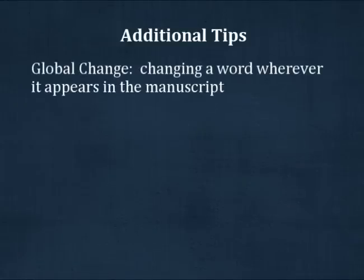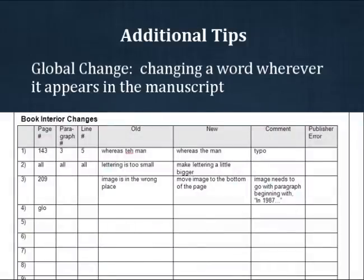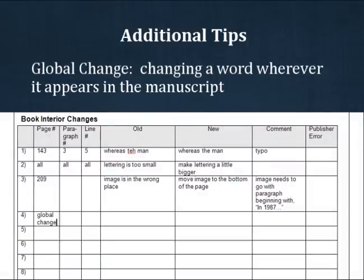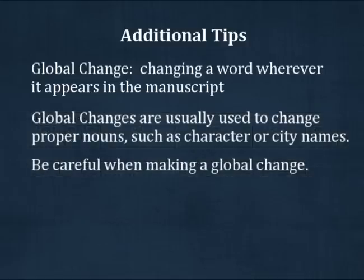If a word is misspelled throughout your book, you do not need to list every instance of the word on the proof form. This kind of change is called a global change. On the proof form, under Page Number, type 'Global Change'. You can skip paragraph number and line number. Under Old, type the word as it appears now, and then under New, type the word as it should appear when corrected. Global changes are usually reserved for proper nouns, such as the names of certain characters or cities.